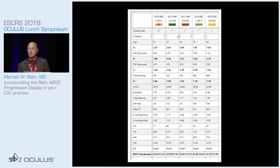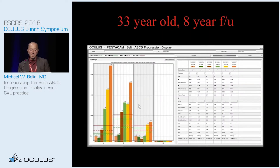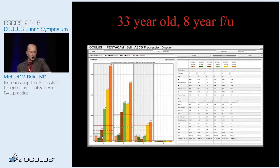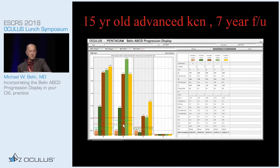Let's look at a couple of examples. This is a 33-year-old with eight years of follow-up — cases we were able to retrospectively review. You can see progressive change, and by the third exam we had statistically significant change, particularly on the back cornea. This is a 15-year-old with seven-year follow-up. By the second exam they had more than a 95% confidence interval statistically significant change on the anterior surface, the posterior surface, and by the third exam on corneal thickness.